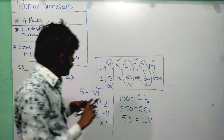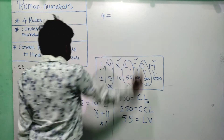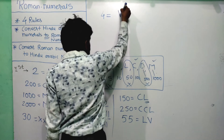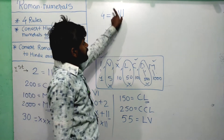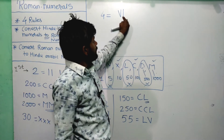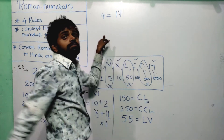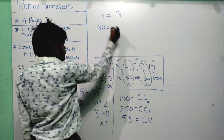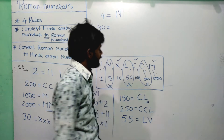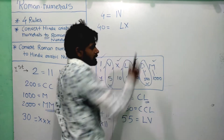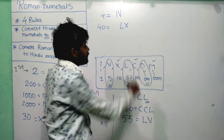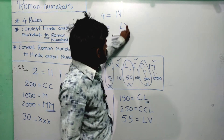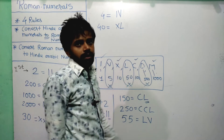To represent 4: there is no symbol for 4, so subtract 1 from 5. Write I to the left of V: IV equals 4. For 40: subtract 10 from 50. Write X to the left of L: XL equals 40. For 400: we cannot repeat C four times (max 3), so subtract 100 from 500: CD equals 400.